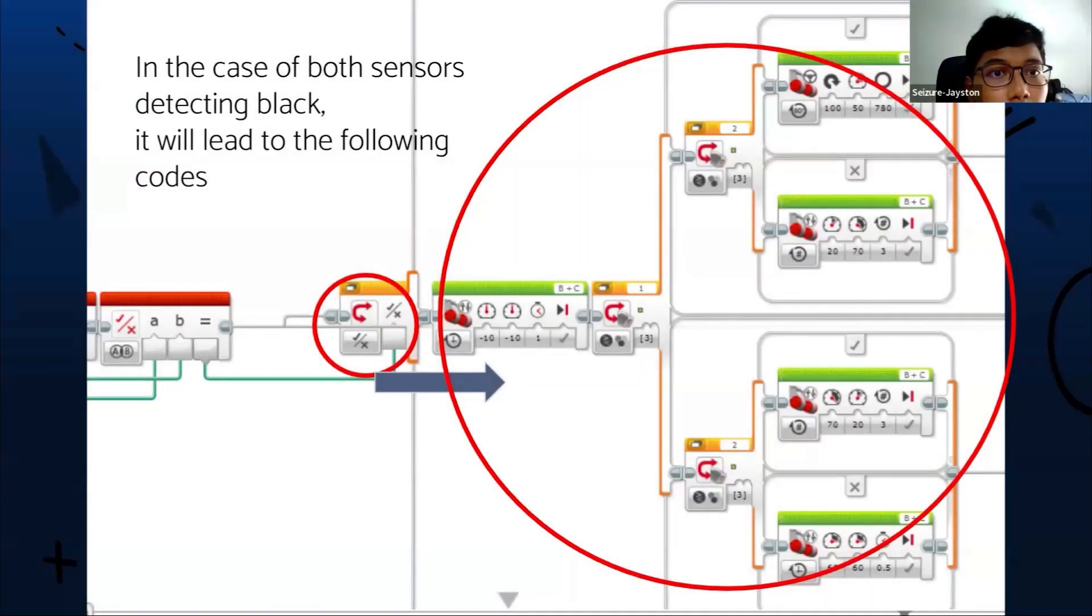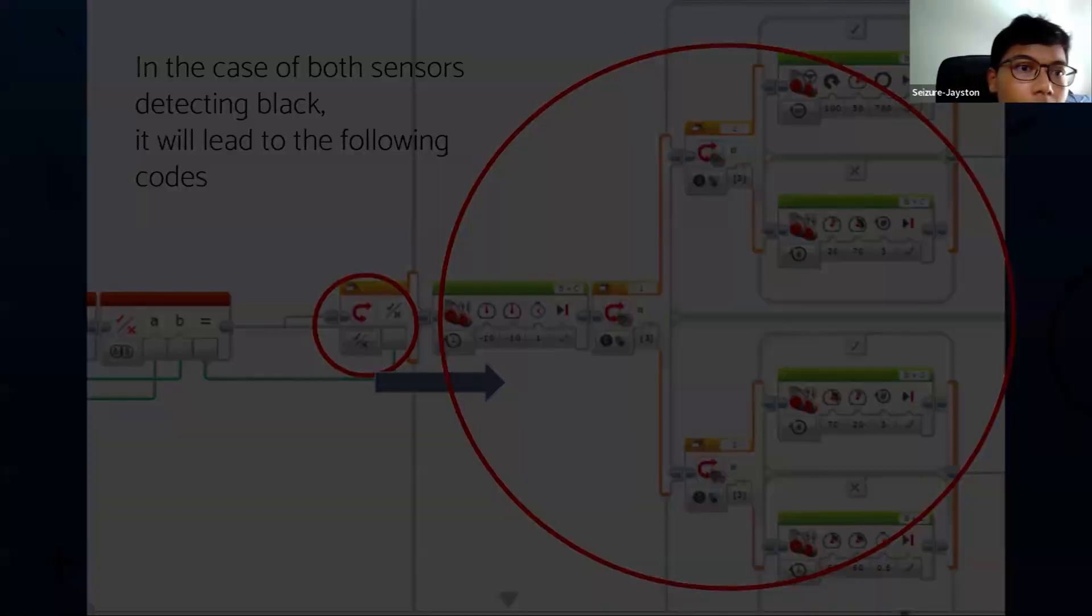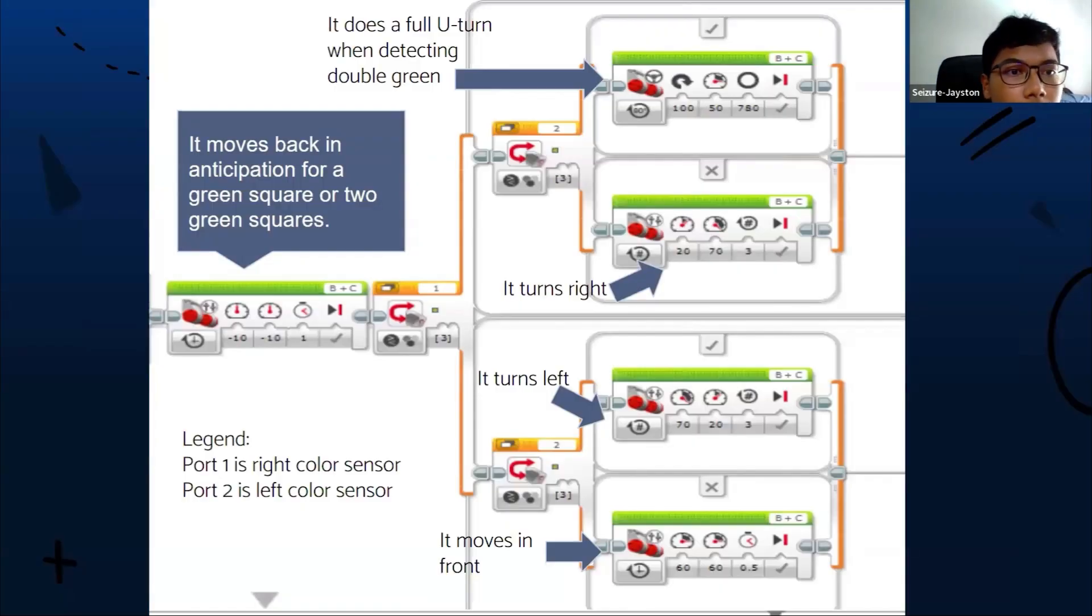In the case of both sensors detecting black, it'll lead to the following code. First, it moves back in anticipation for green square or two green squares. When it detects double green, it does a full U-turn as you saw in the previous GIF. Port 1 is the right color sensor whereas port 2 is the left color sensor. You can see that it turns right, turns left, or moves in front depending on what case it senses.